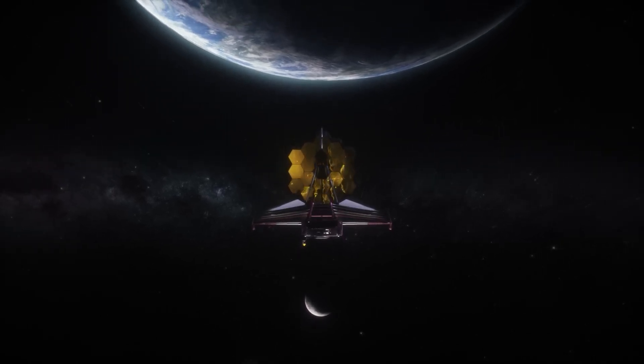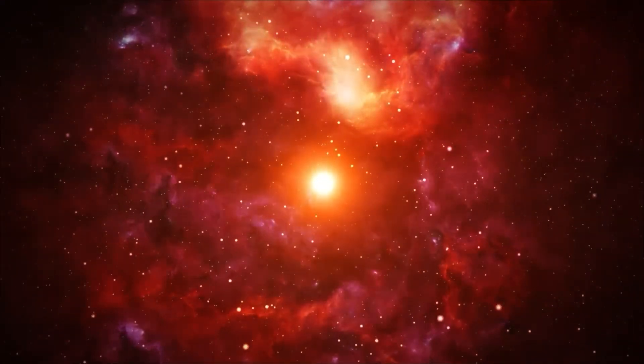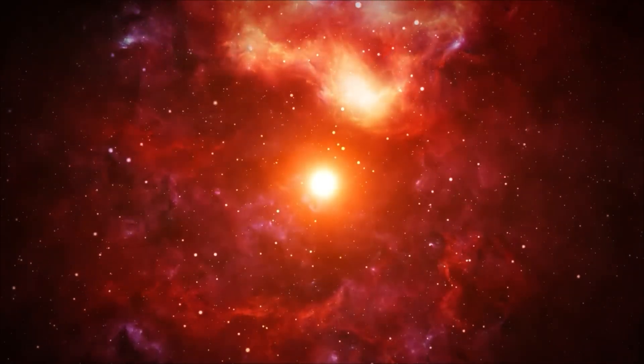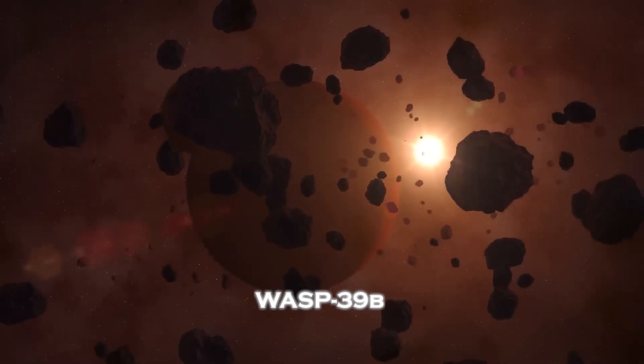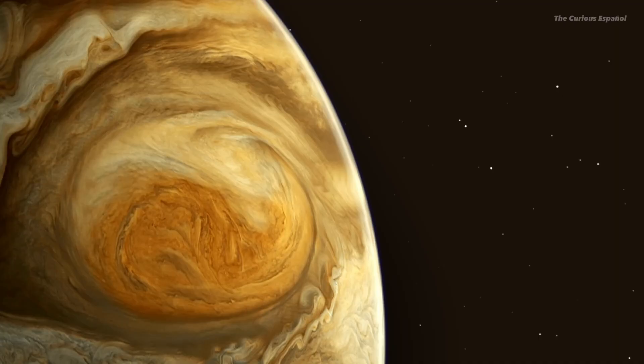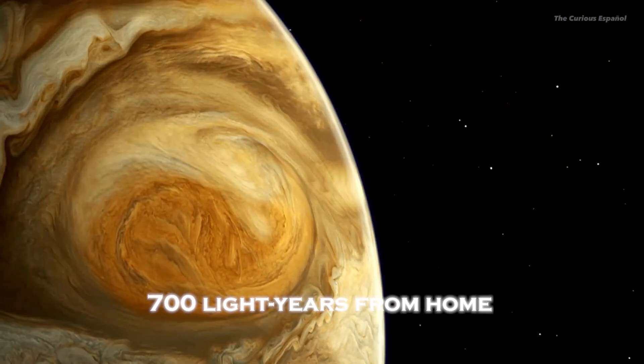Meanwhile, the Webb telescope has studied a planet orbiting a star in the constellation Virgo, conducting one of the most extensive investigations of extrasolar planets. The planet's name is WASP-39b, and it is located 700 light-years from home.